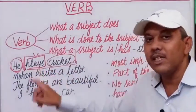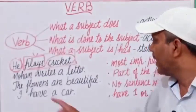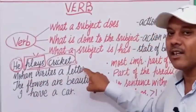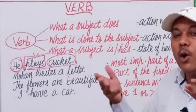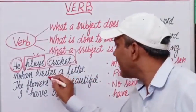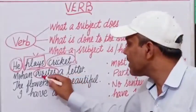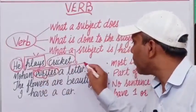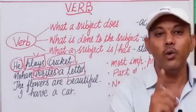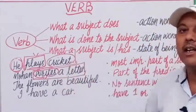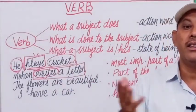A verb is always the part of the predicate in a sentence, and it plays a very important role in the sentence.